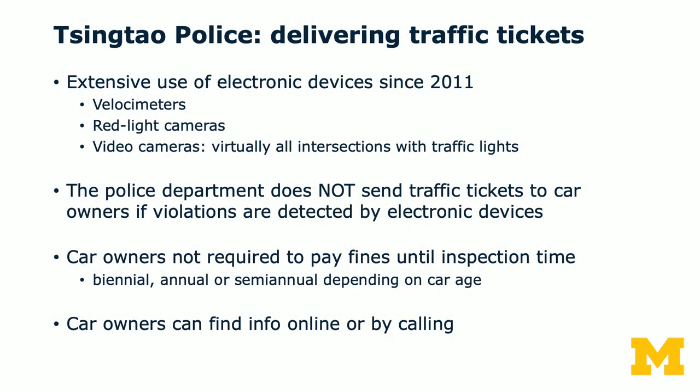Some background on how traffic tickets are delivered by the Qingdao police. Here in North America, if you're pulled over by police there's no way you were unaware of it. But in Qingdao it's quite different — there is extensive use of electronic devices since 2011, with red light cameras and video cameras at virtually all intersections with traffic lights. The police department does not send traffic tickets to car owners if violations are detected by electronic devices. Car owners are not required to pay fines until inspection time, which could be annual or semi-annual depending on car age. Car owners can find information online or by calling, but usually they find out at inspection time.